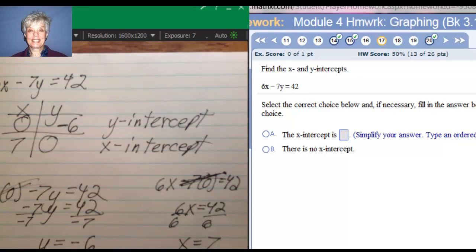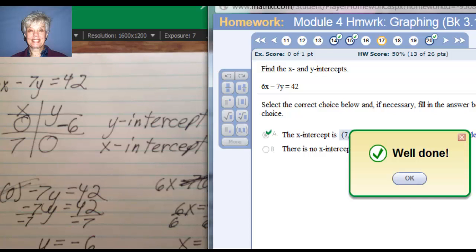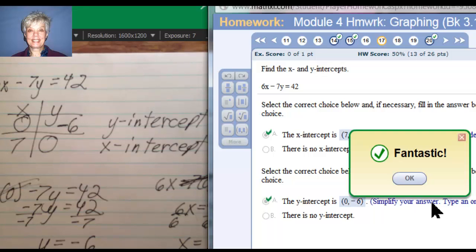Now, my x-intercept, simplify your answer, type an ordered pair, in other words a point, my x-intercept is 7 comma 0 with parentheses around it, and I check my answer. Well done, it says. Now, the y-intercept is 0, negative 6. Check answer. Fantastic!